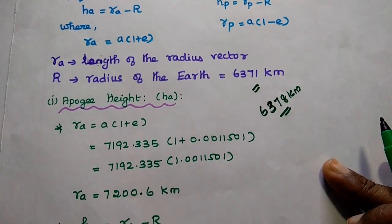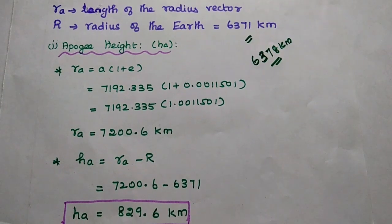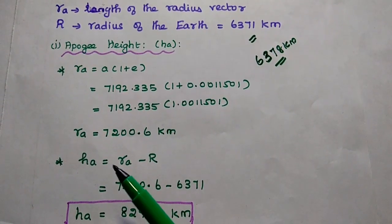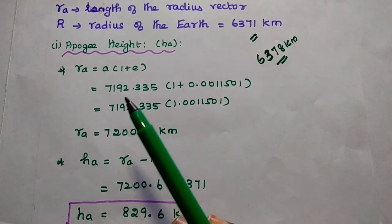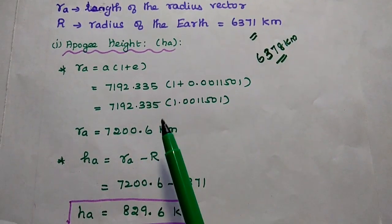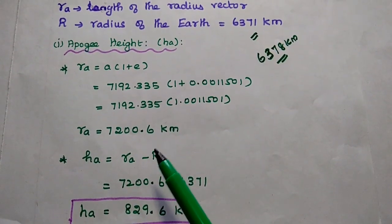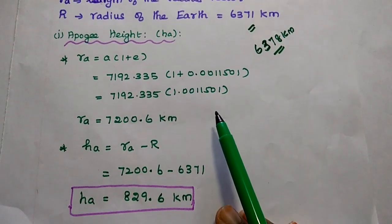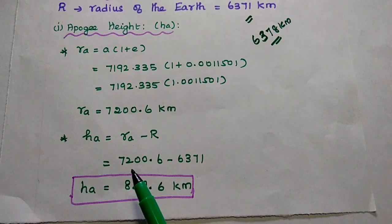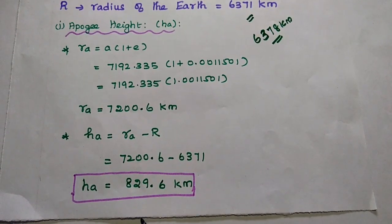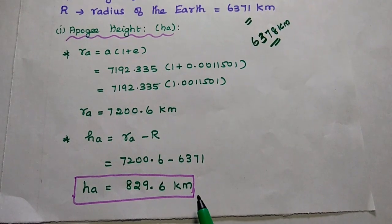First we are going to find out the apogee height. The formula is HA equal to RA minus capital R. First we have to find out small RA, that is equal to A into (1 plus E). We have to substitute the A value and E value in this formula. Then we can get RA equal to 7200.6 km. After that we substitute this value in the apogee height formula RA minus capital R, and we get apogee height as 829.6 km.